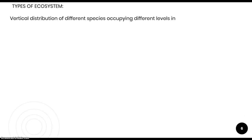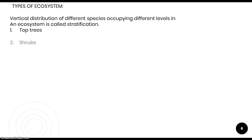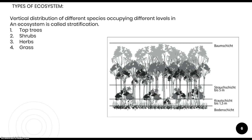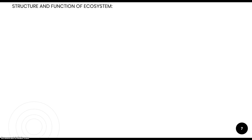Here we have the different levels of ecosystem. The vertical distribution of different species in the ecosystem is known as stratification. We have producers, consumers, decomposers, and several other things arranged one after another — together these form stratification. In a terrestrial forest ecosystem, as shown in the diagram, plants are categorized into four categories: top trees at the topmost level, then shrubs, then herbs, and then grass.